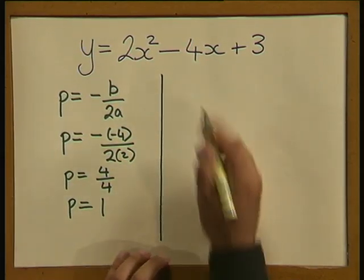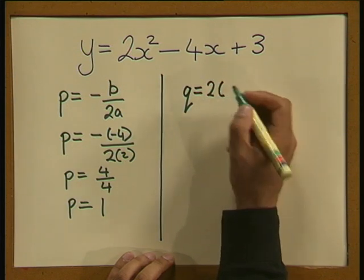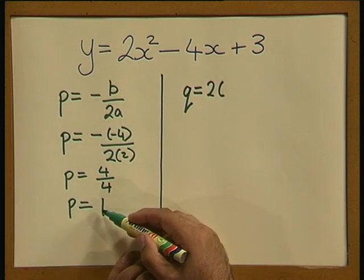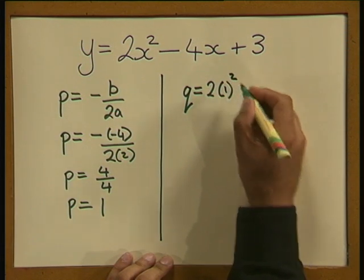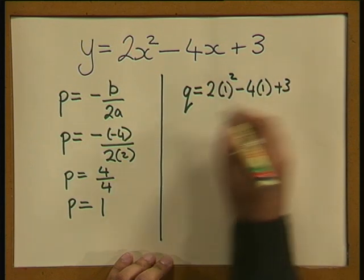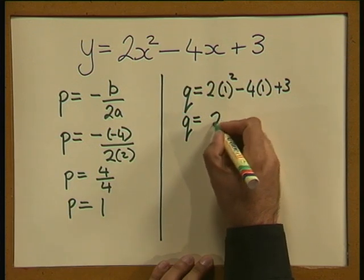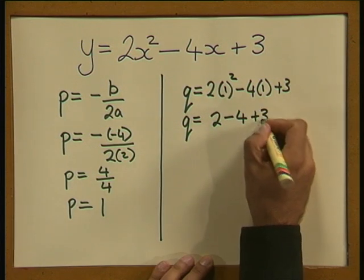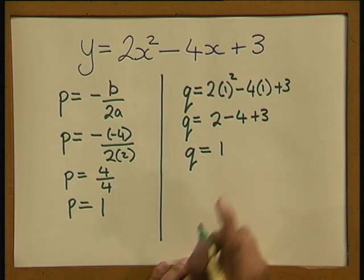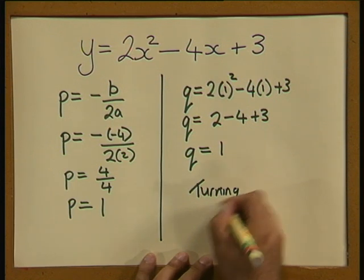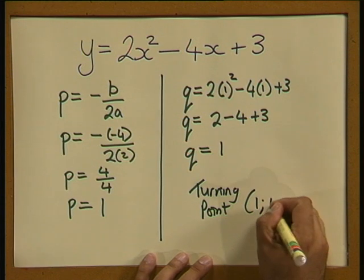We also need to calculate q, the y-coordinate of the turning point. We substitute the value of p, which is 1, for x in the equation. So q is equal to 2 times 1 squared minus 4 times 1 plus 3, which gives us 2 minus 4 plus 3. Therefore q is equal to 1, and the coordinates of the turning point are (1, 1).